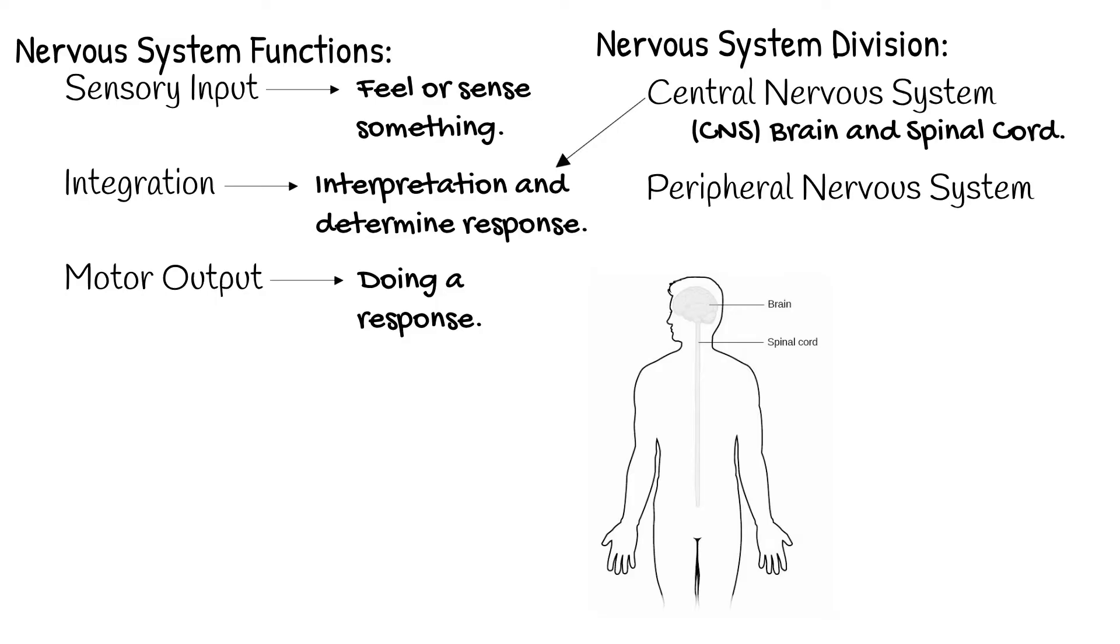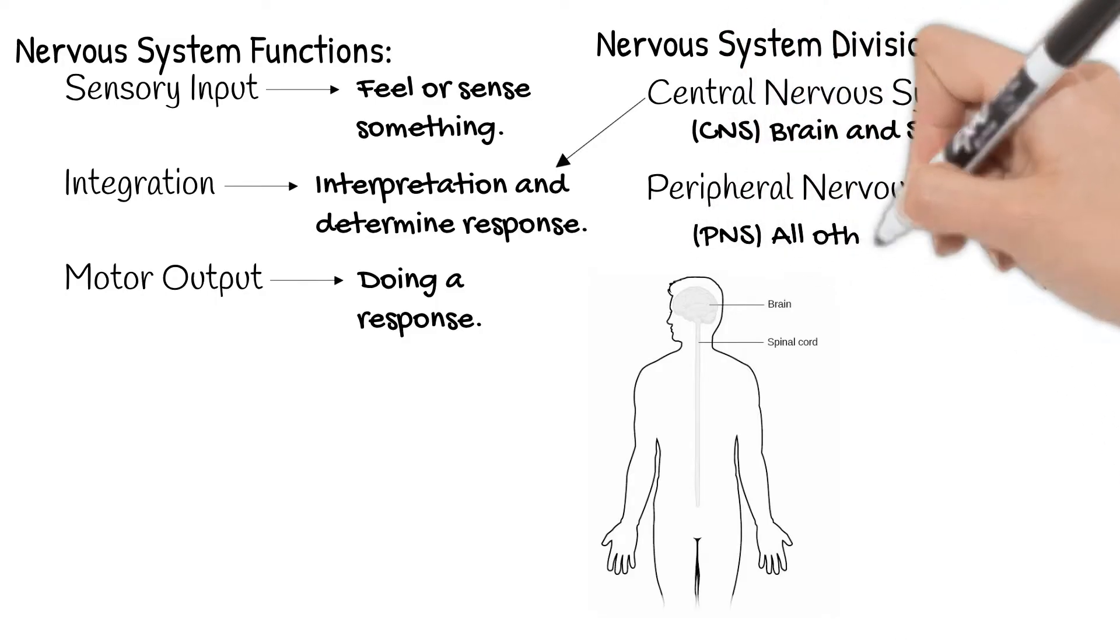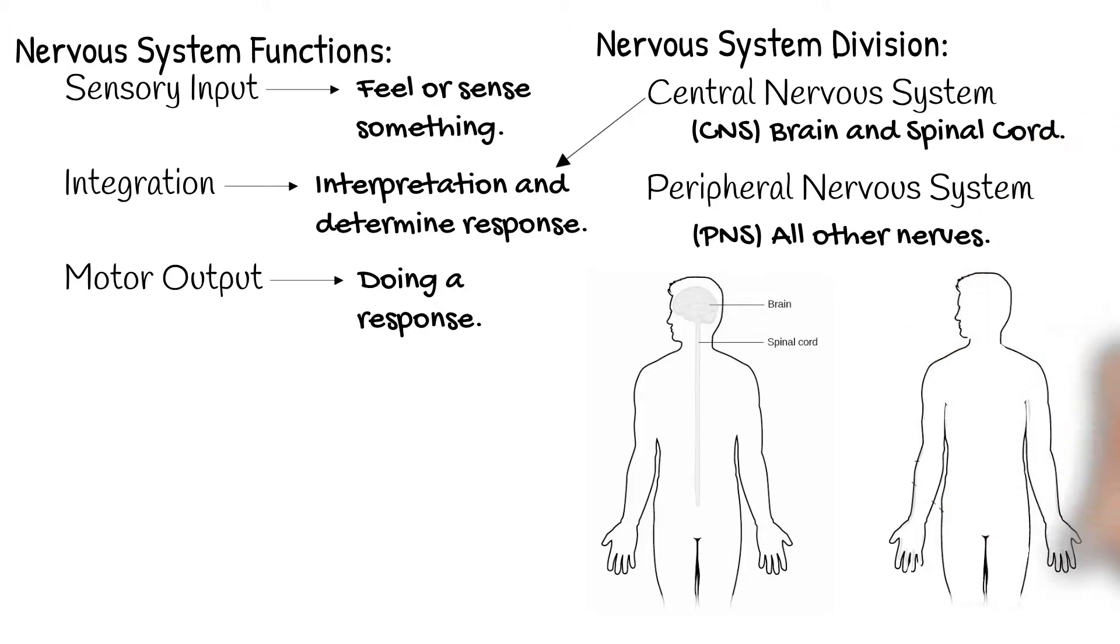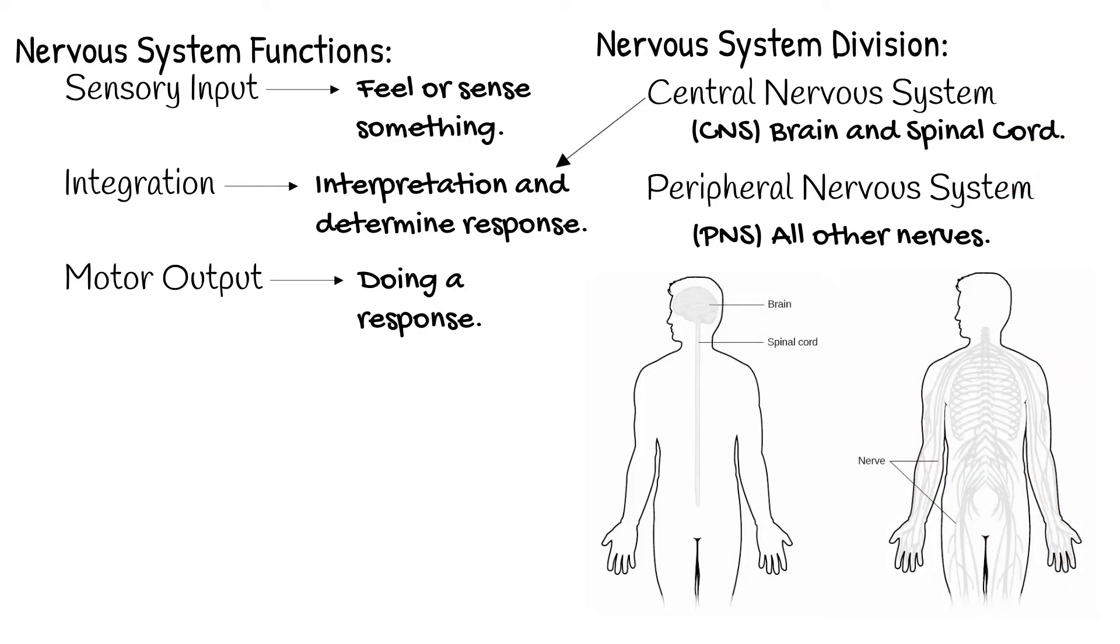The peripheral nervous system, or PNS, is everything else. Your nerves communicating between the CNS and the rest of the body, so sending the sensory input and motor output to where they need to go.